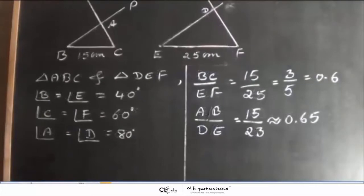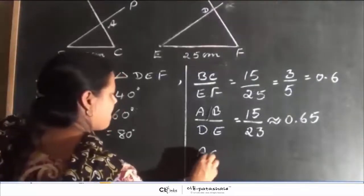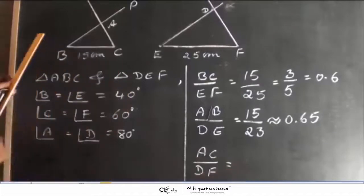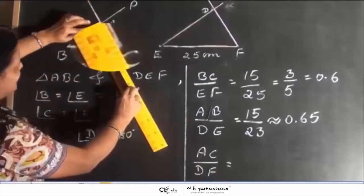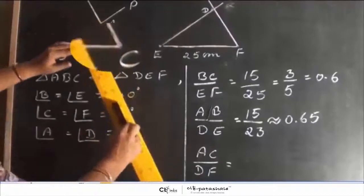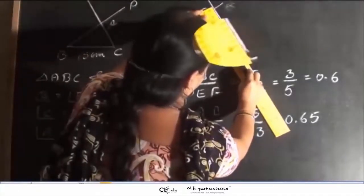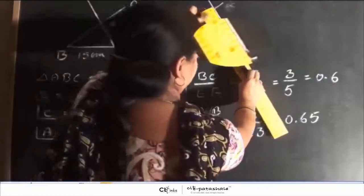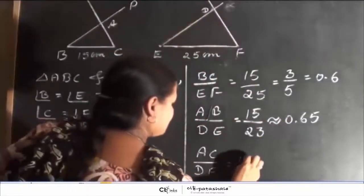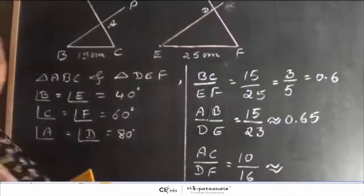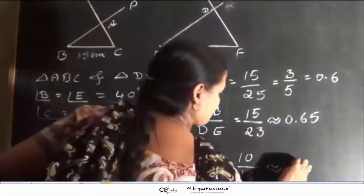Now, let us measure AC by DF. First we will measure AC is equal to 10 centimeters. And DF is equal to 16 centimeters. So, we will record it 10 by 16 which is equal to approximately 0.62.